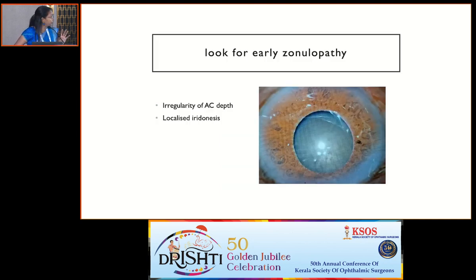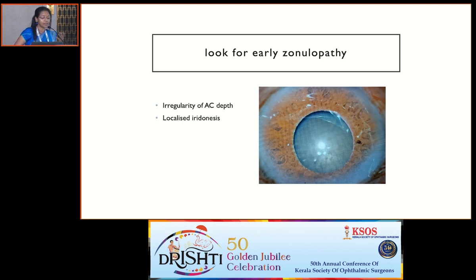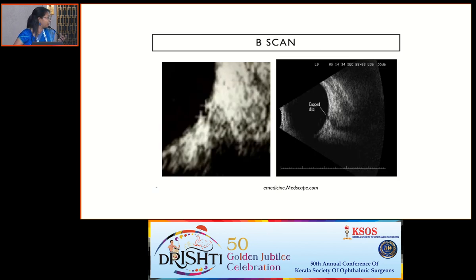When you dilate the pupil, always look for evidence of early zonulopathy — there can be an increase in the gap between the edge of the zonules and the pupillary margin, which is more evident if you ask the patient to look down or sideways. In cases with a dense cataract where you cannot visualize the disc, this can help give a relative size of the optic cup, though the edges of the cup may not be clearly discernible.